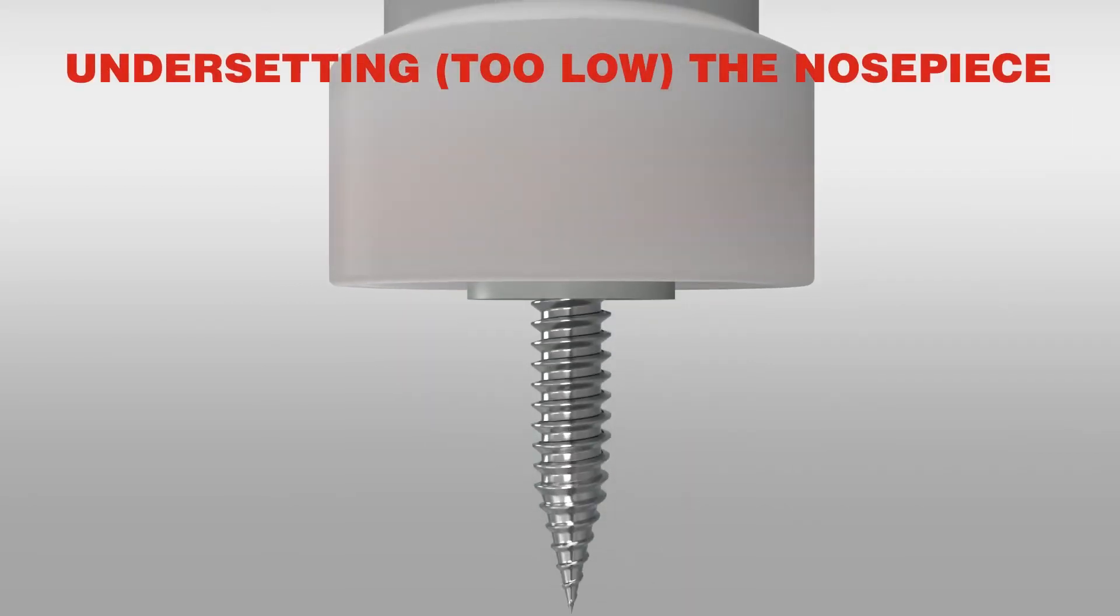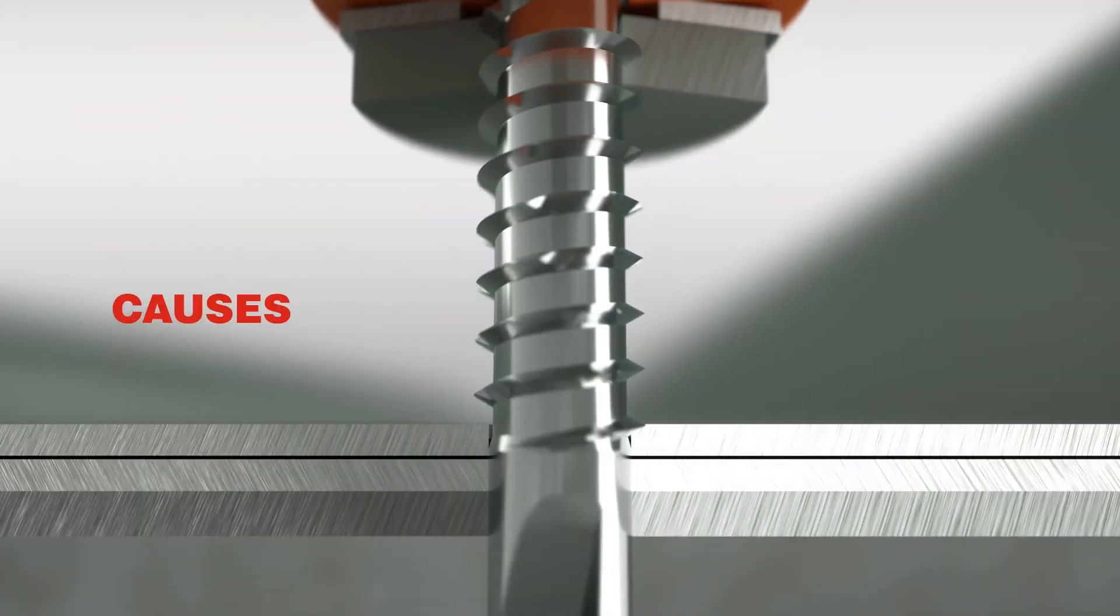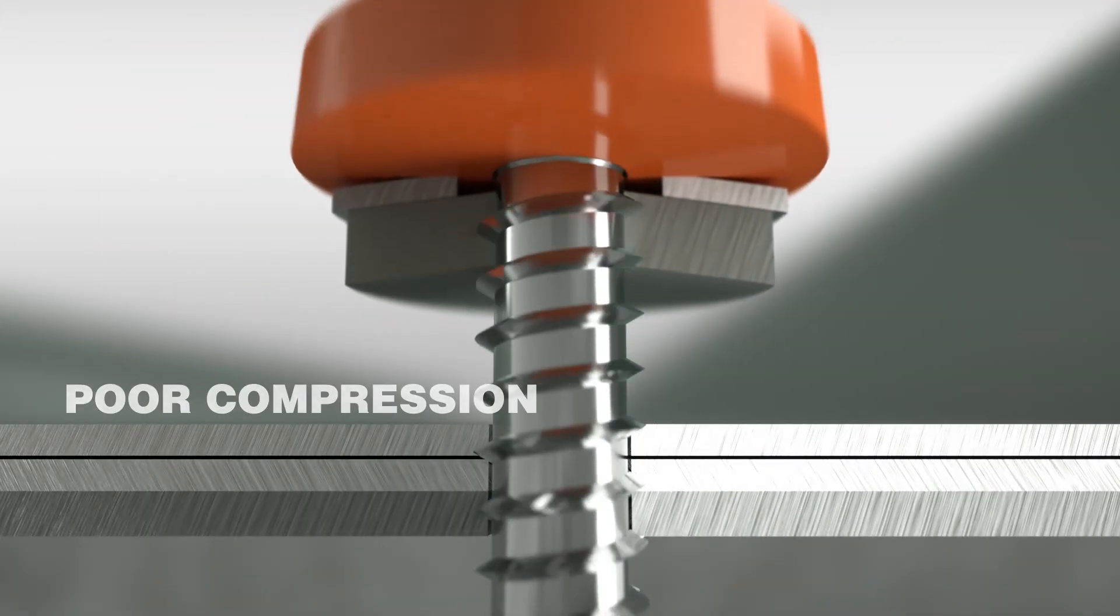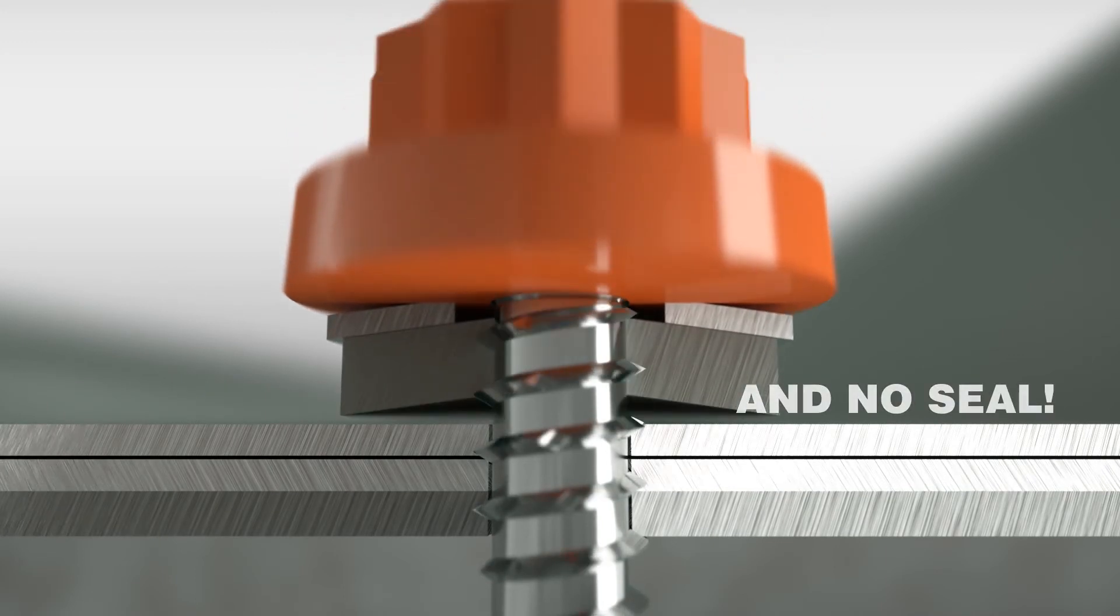Here's a couple more pointers to watch out for when you're looking to achieve the right nose piece setting. Under setting the nose piece will result in little or no compression of the washer, and that means little or no seal.